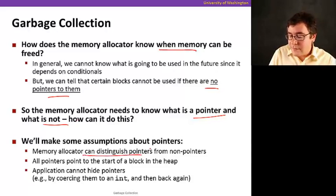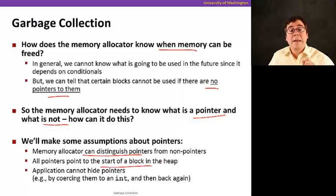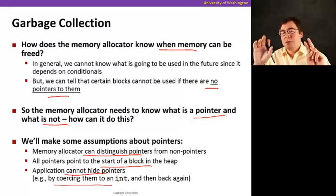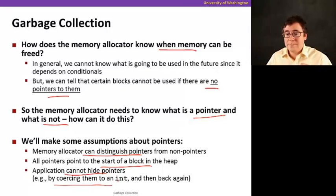First, memory allocator can distinguish pointers from non-pointers. So all pointers point to the start of a block in the heap, and the application cannot hide pointers. For example, it cannot cast them into ints and then back again to hide pointers. So that's what I mentioned before, disciplined use of pointers.